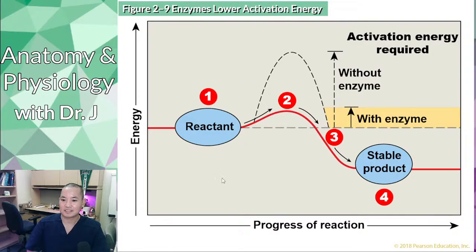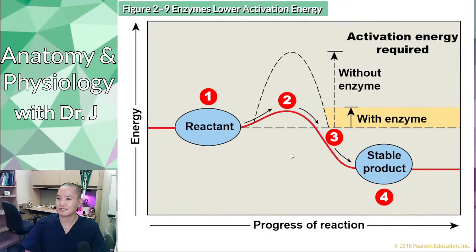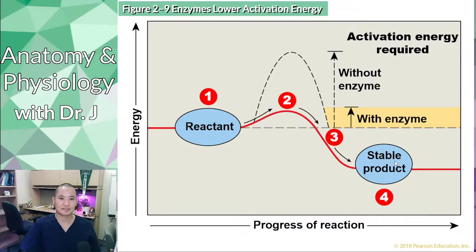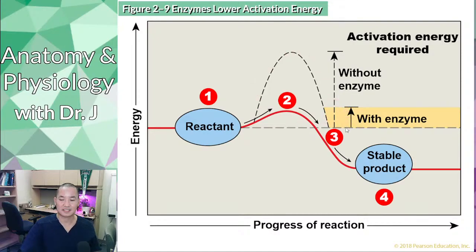Now let's talk about enzymes. Here we have a graph showing the progress of reactions. You can think of the x-axis as time: you start with a reactant and end up with a product. But in order to go from a reactant to a product, you need a little energy. The graph shows the energy you would need without an enzyme versus the energy needed with an enzyme — the enzyme requires significantly less.